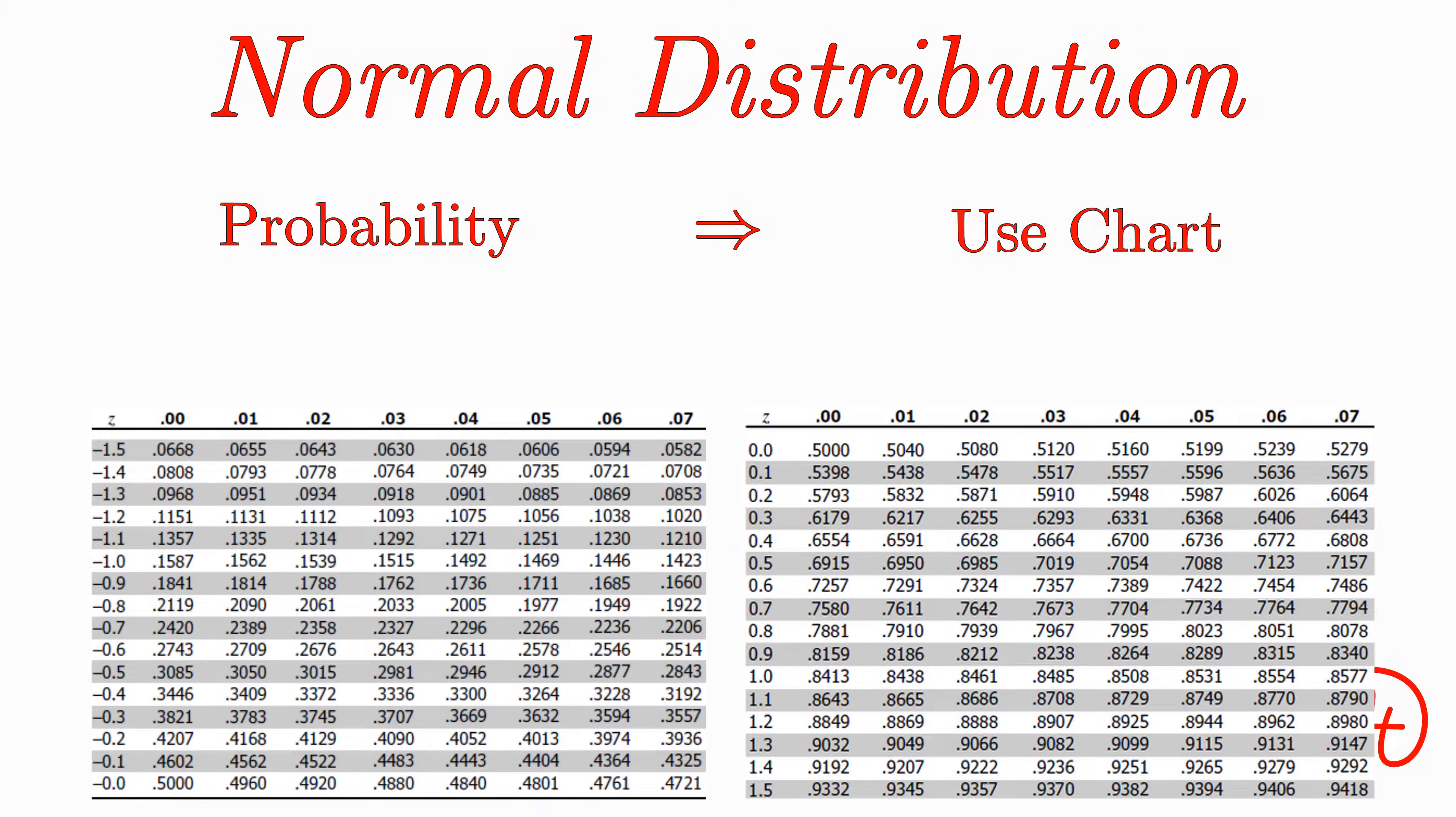So for example, if your z-score was 0.63, you'd go down to the 0.6 row, corresponding to the 6 in the z-score's tenths place, and over to the 0.03 column, corresponding to the 3 in the z-score's hundredths place, to get the associated probability value of 0.7357.